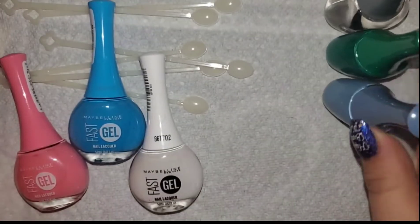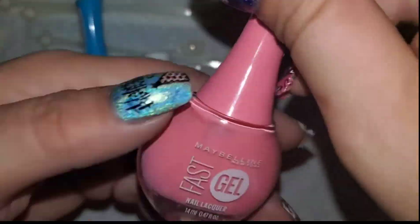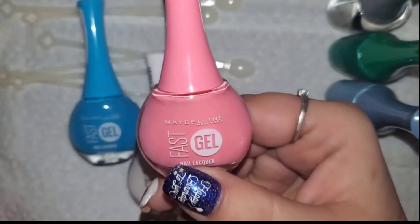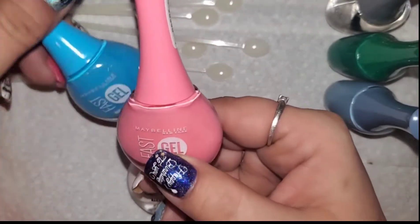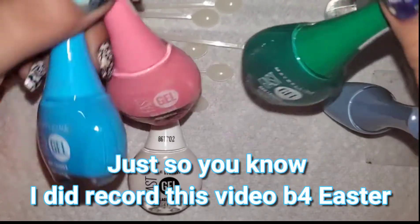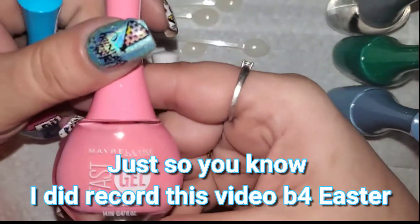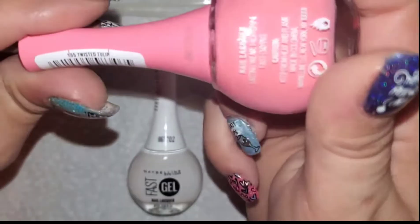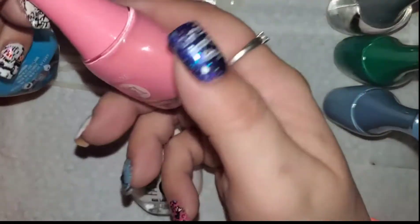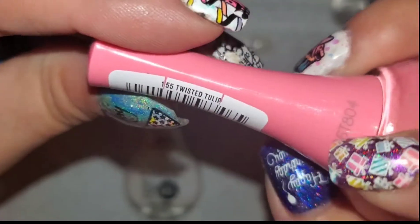Obviously it's not teal. Then I use a lot of pink with Easter coming. I thought these were good for Easter colors. This is just the baby pink bubblegum pink, called Twisted Tulips 155.